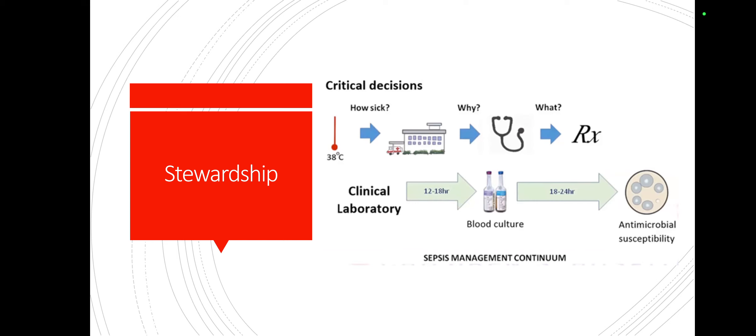On the topic of blood culture and antibiotic stewardship: why is it important to get a blood culture? It's a critical decision — you have a child with a temperature, you presume they're sick but don't know how sick, you don't know why they're sick — it could be viral — and you don't know which antibiotic to give if it's bacterial. Send the culture and within 48 hours at best you'll have a result to help titrate your treatment. White cell count and CRP may also help, though they're not specific.